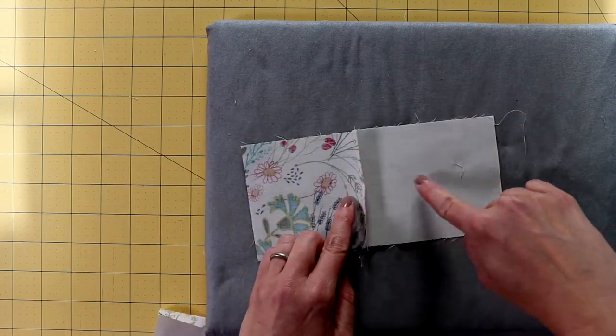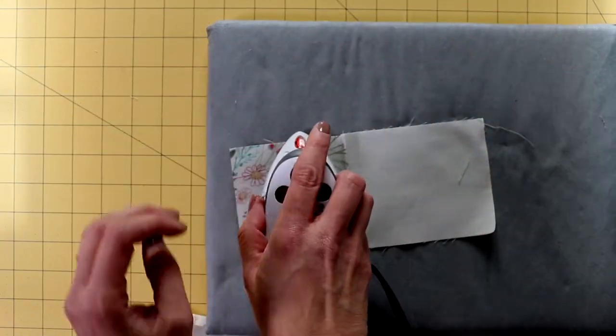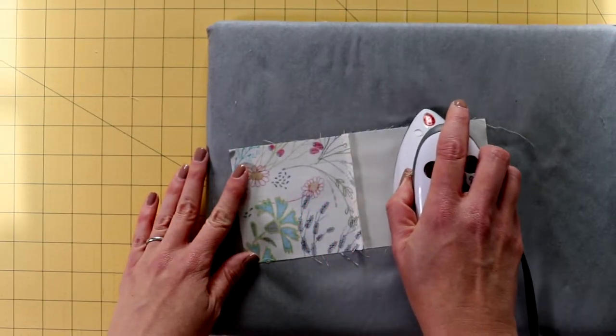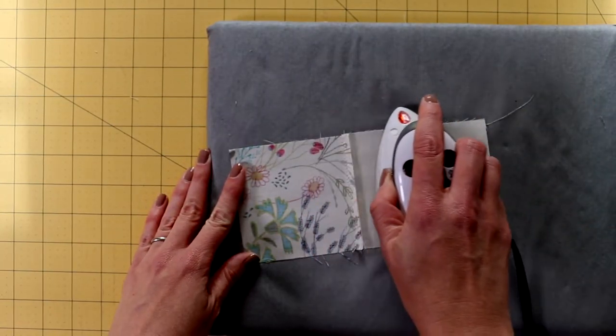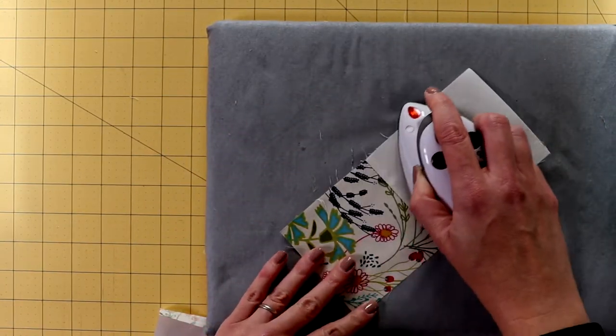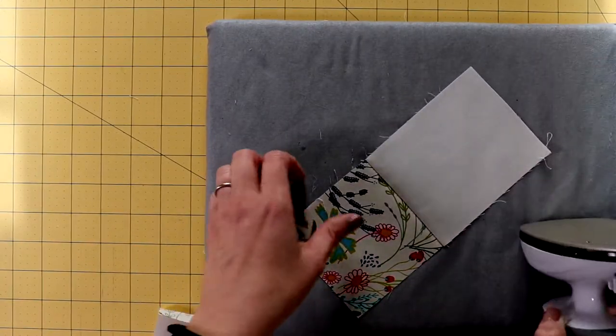But then I'm going to press the seam towards the larger of the 2 pieces, so pressing it towards the rectangle. Just give it a good pressing. If you like to use starch, you could starch it up a little bit too. I usually do that.